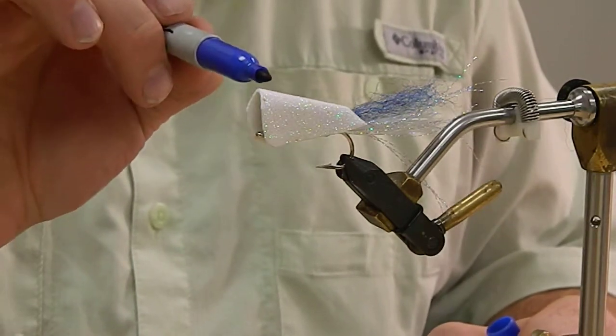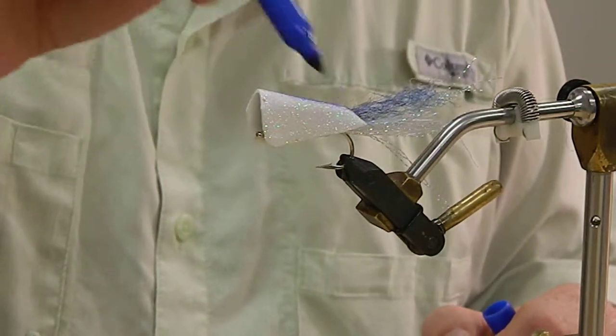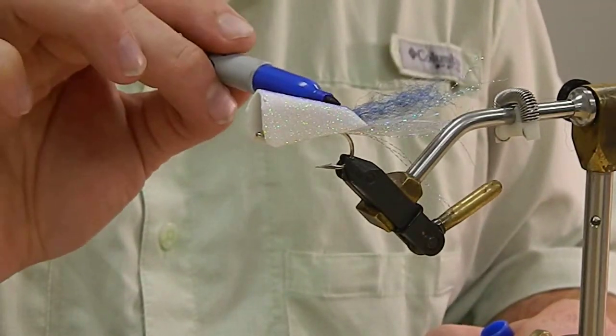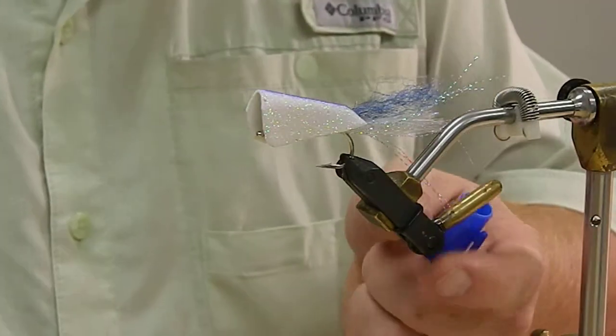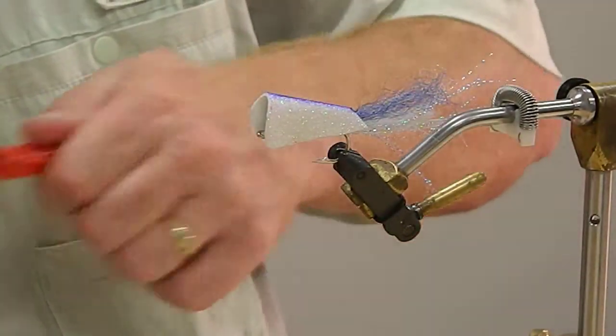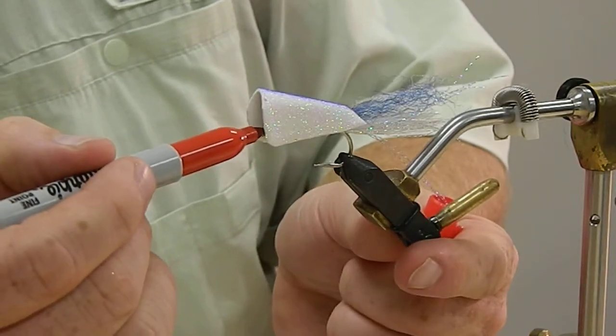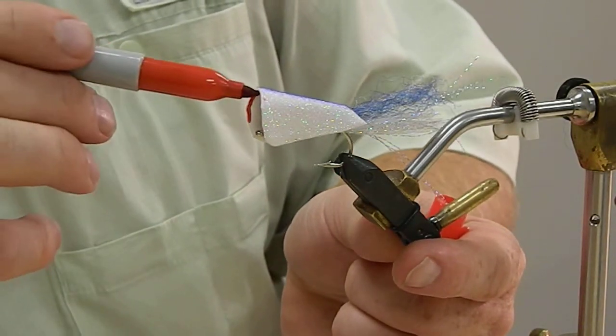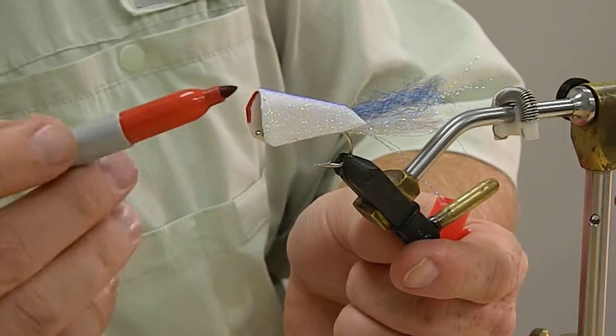I like to go ahead and put a strip of blue here on the top, like so. And also I'll use red. I like to color the throat of the fly in red, and this also makes it look red, white, and blue.